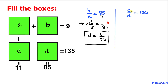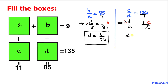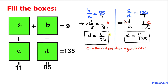Now let's focus on the equation c over d equal to 135. Making the right-hand side a fraction and flipping both sides gives d over c equal to 1 over 135. Multiplying both sides by c gives us d equal to c divided by 135.